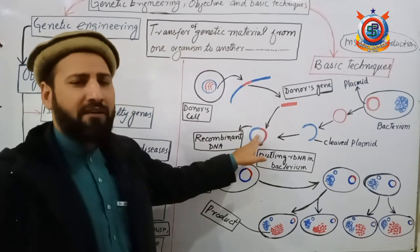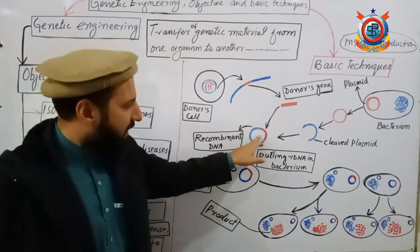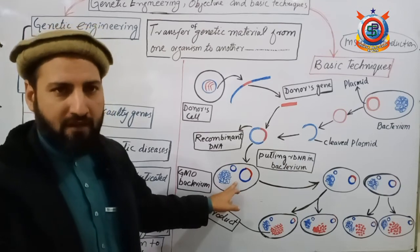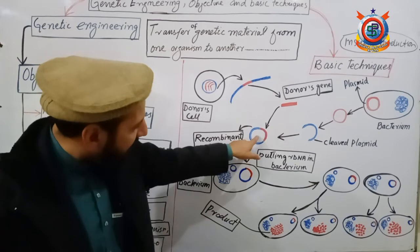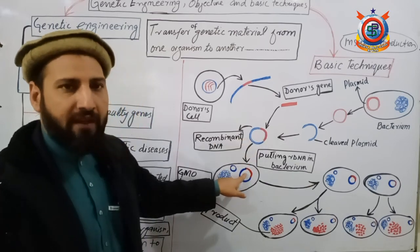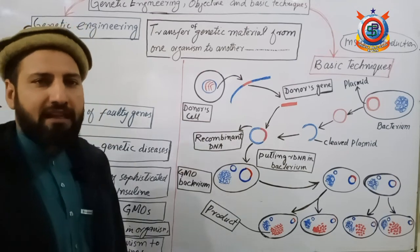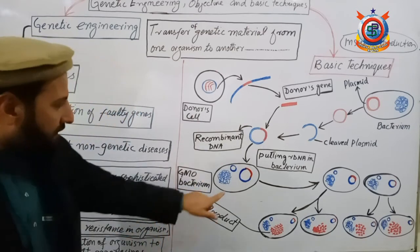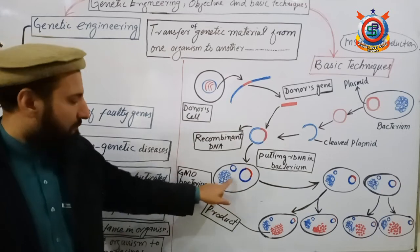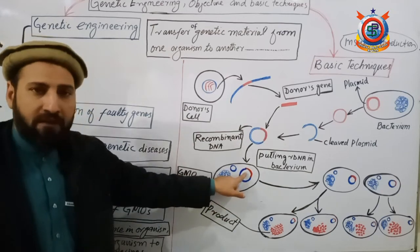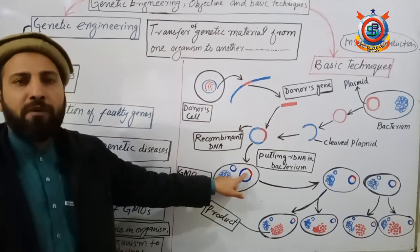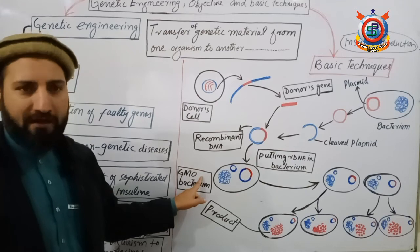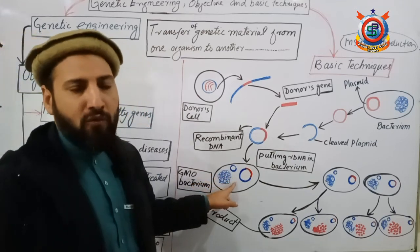Now we have the recombinant DNA molecule. In the next step, this recombinant DNA molecule is inserted into a bacterial cell, as shown here. When the rDNA enters the bacterial cell, we obtain a genetically modified bacterium — a GMO. We call it a genetically modified bacterium because a gene has been introduced that does not belong to this bacterium but was taken from human DNA, so its genes have been changed.